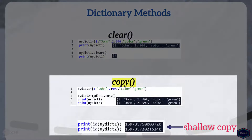The next method, copy, returns a shallow copy of the dictionary. In this example, I have dictionary object myDictionary1. And when I call the copy method, it returns the shallow copy of myDictionary1.